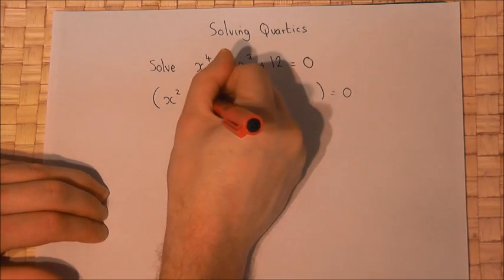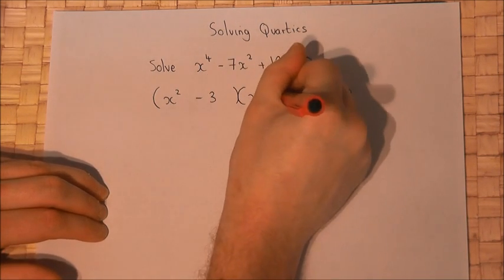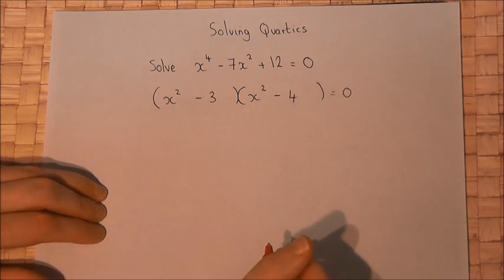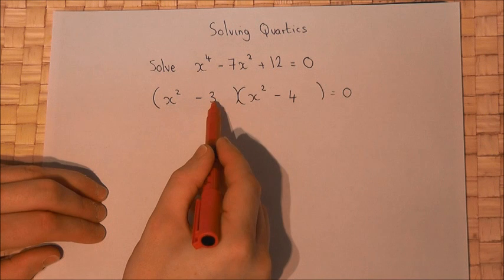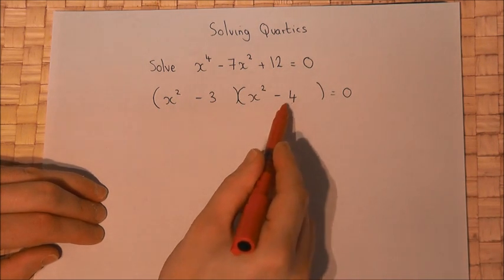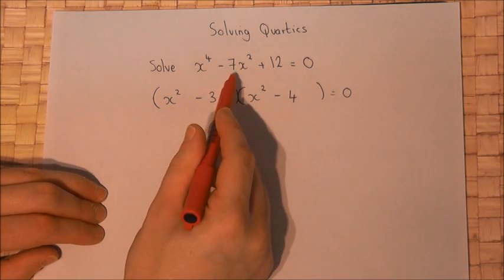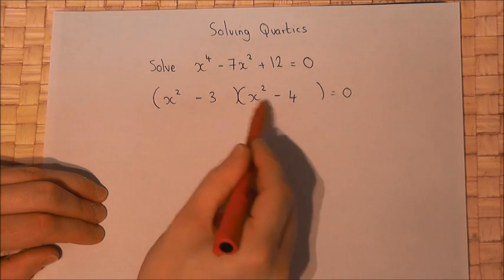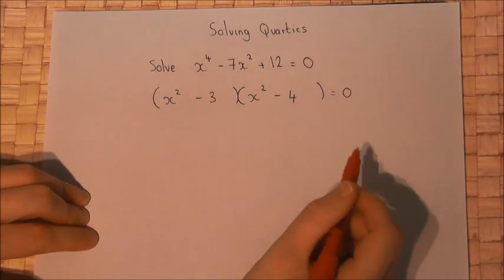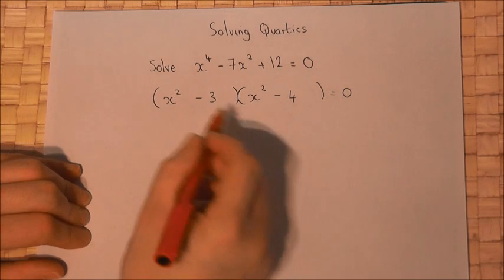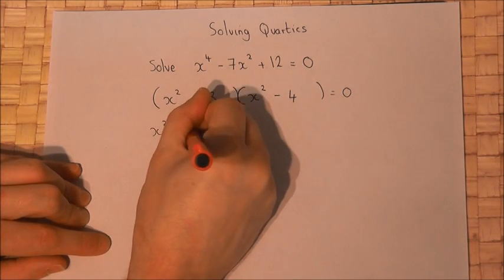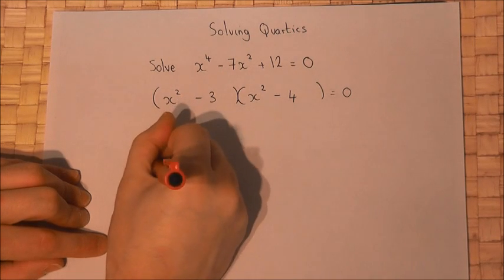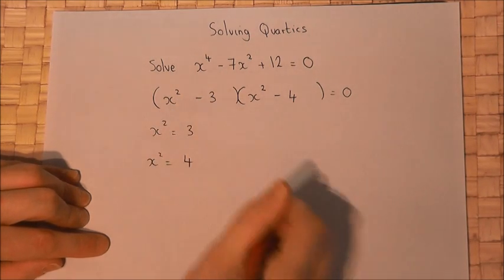But to get a minus 7 requires a minus 3 and a minus 4. And if you look at this, we get an x to the power of 4, we get a minus 3x squared and a minus 4x squared which is minus 7x squared, and then minus 3 times minus 4 is plus 12. So to get x, we know that x squared will equal plus 3, or x squared will equal plus 4.